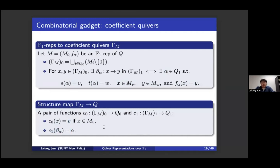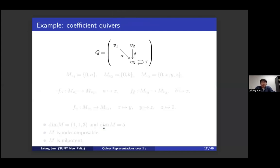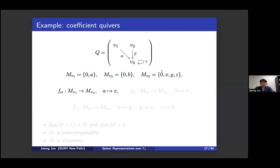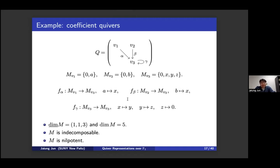Here is another example. Consider quiver Q with three vertices v1, v2, v3 and three arrows α, β, γ. I attach F1 vector spaces Mv1, Mv2, Mv3 at each vertex. The F1 linear maps are: f(α) sends a to x, f(β) sends b to x, and f(γ) sends x to y, y to z, and z to zero. The dimension vector is (1, 1, 3), the total dimension is five, this F1 representation is indecomposable, and it is nilpotent.